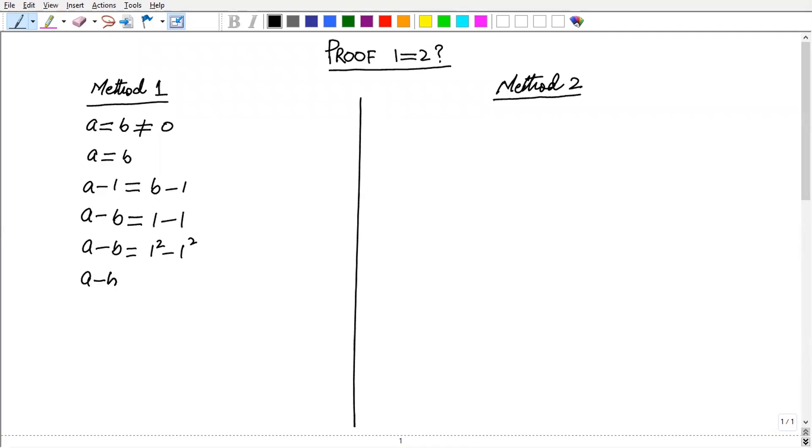So it gives you A minus B equals 1 minus 1, times 1 plus 1, times 1 minus 1.